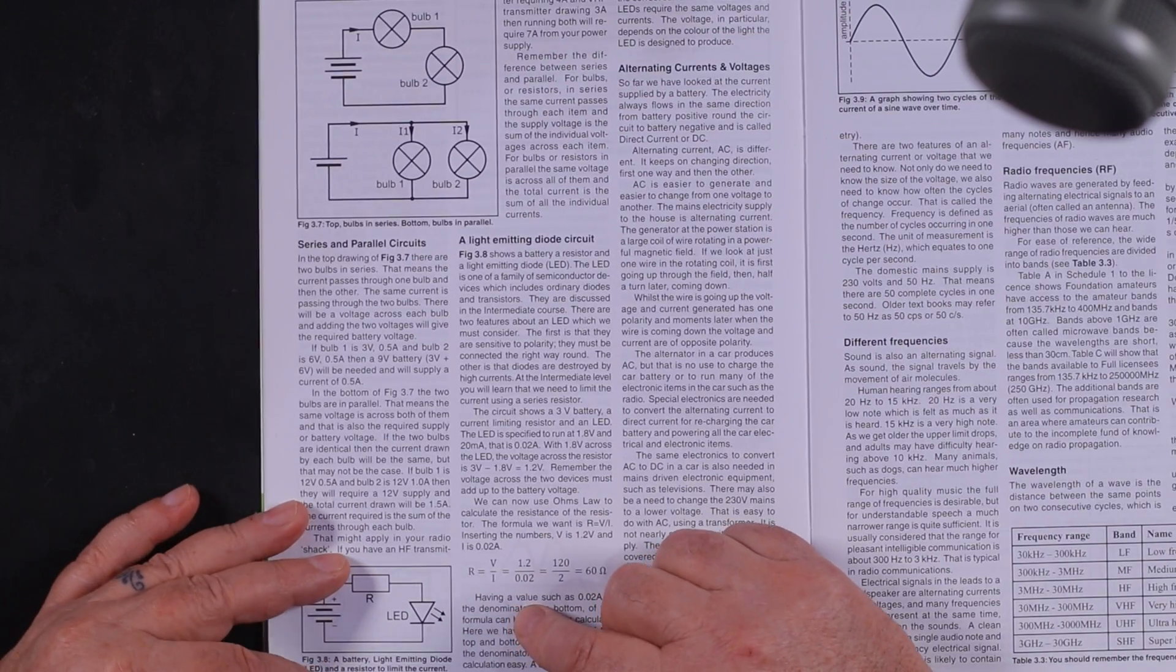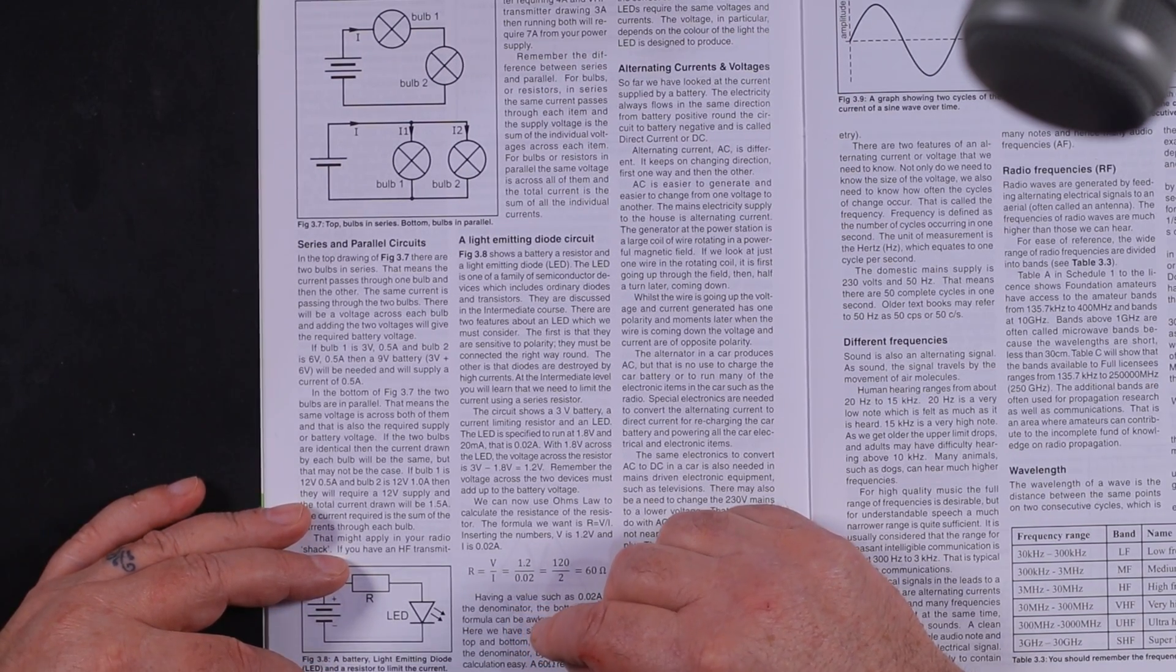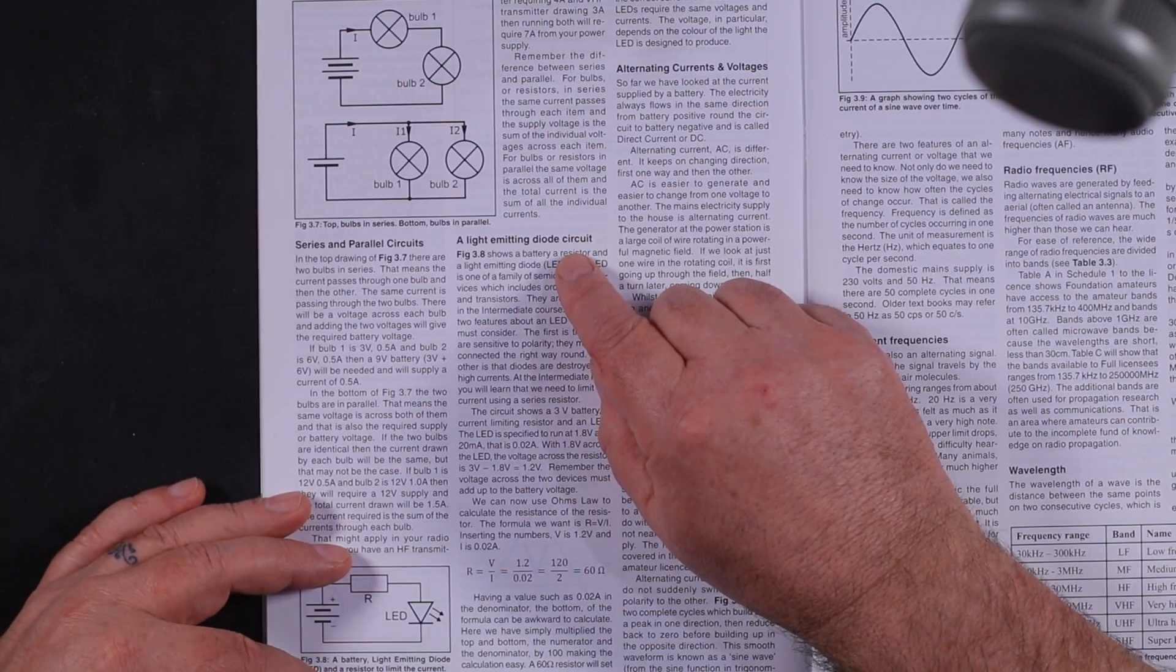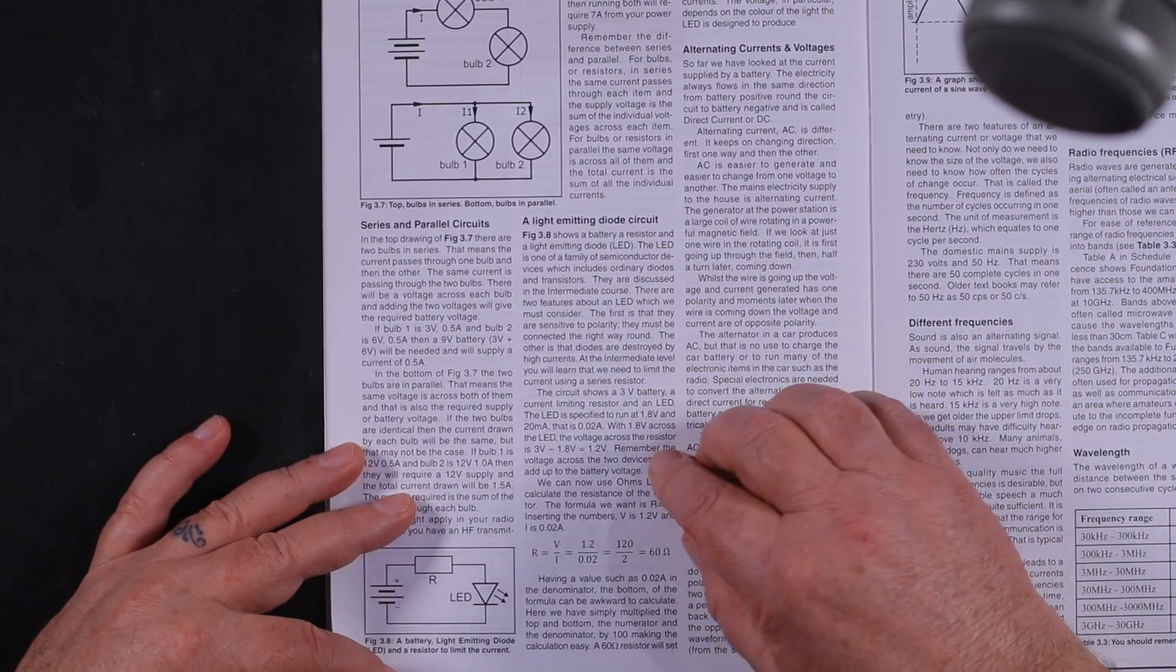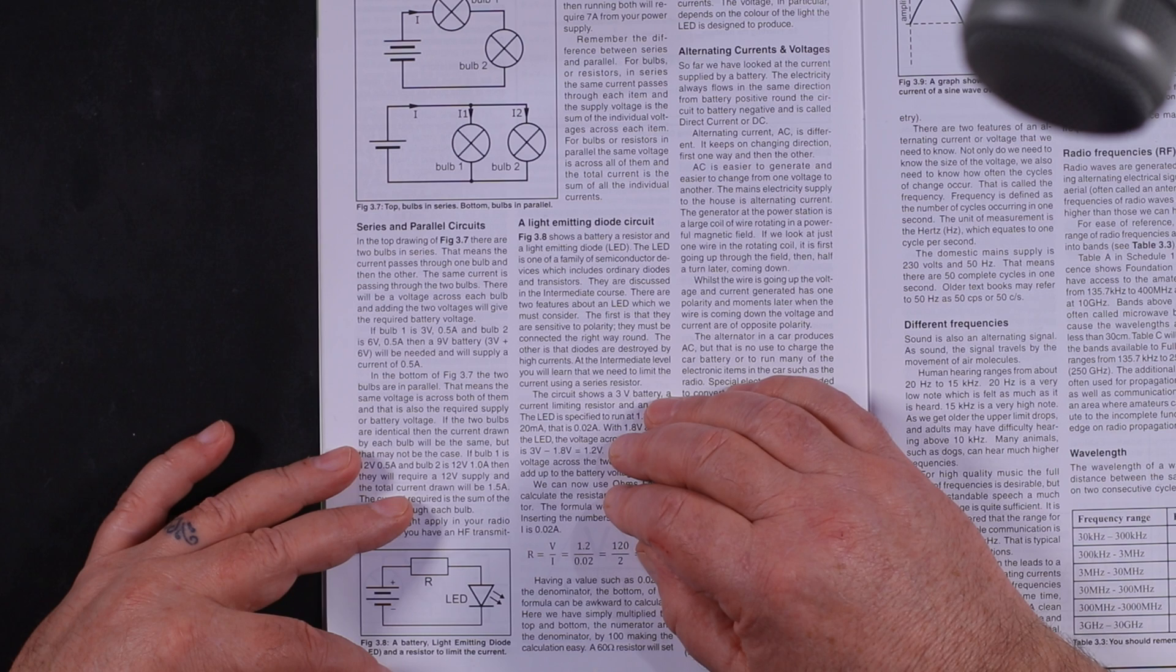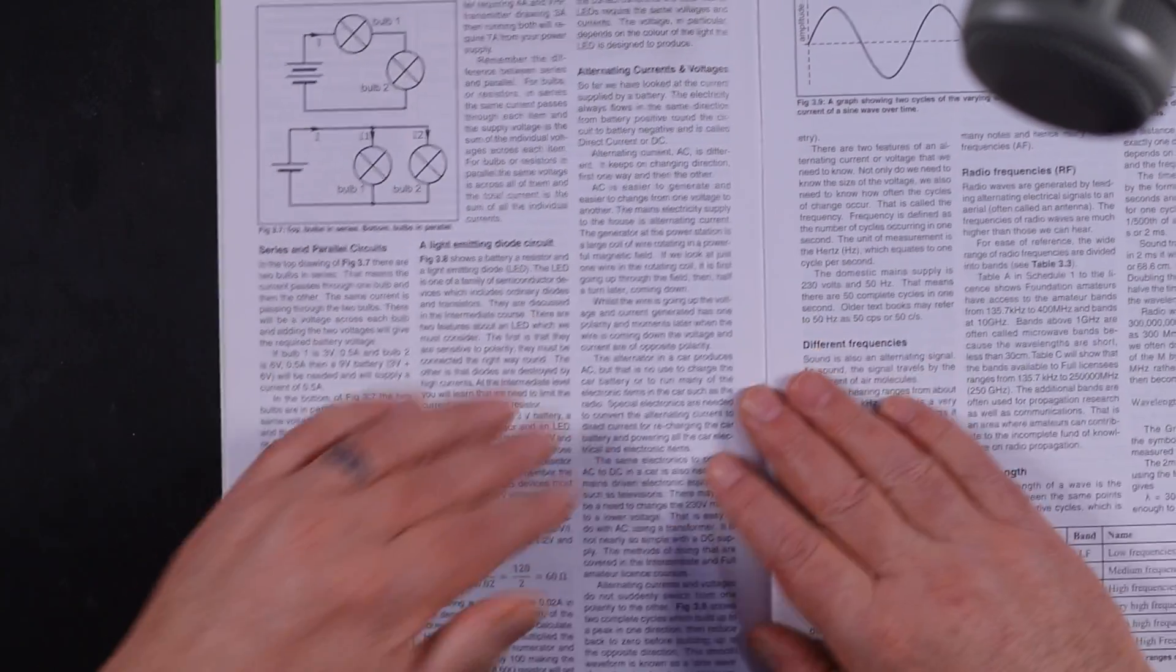There's a bit of Ohm's law in the next section as well, which is to do with LEDs - light emitting diodes. There's a bit of Ohm's law and it's also reminding us that a light emitting diode is polarity sensitive. In other words, positive to positive and negative to negative, not the other way around.